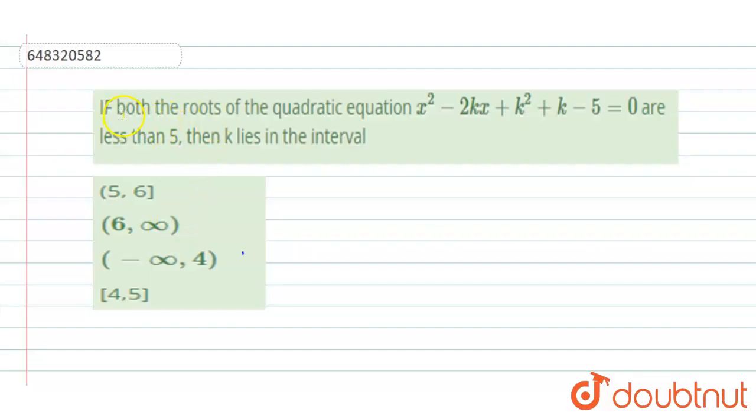Hello everyone, our question is: if both the roots of the quadratic equation x squared minus 2kx plus k squared plus k minus 5 equals 0 are less than 5, then k lies in the interval. Here we need to find the interval for k. Few options are given to us.